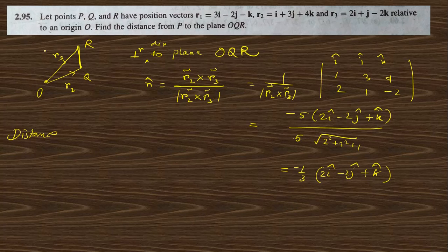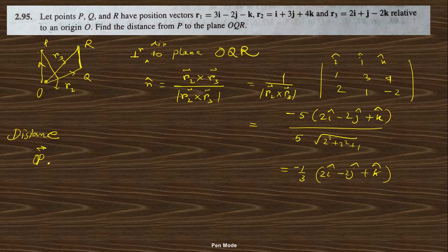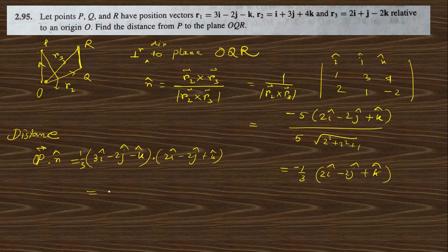The distance from P to the plane is OP vector dot n-cap. Vector OP (which is p = r1) equals 3i − 2j − k. Dotting with n-cap = (−1/3)(2i − 2j + k): we get (−1/3)(6 + 4 − 1) = −3. Taking the absolute value, the distance is 3 units.